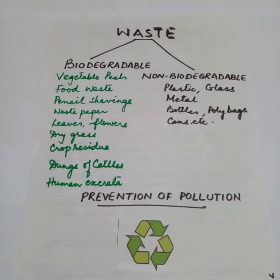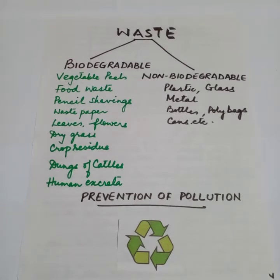To prevent water pollution, sewage water should be treated in a sewage treatment plant before it is released into a river or lake. We should avoid throwing any type of waste into the water. To avoid land pollution, solid waste should be disposed of properly.